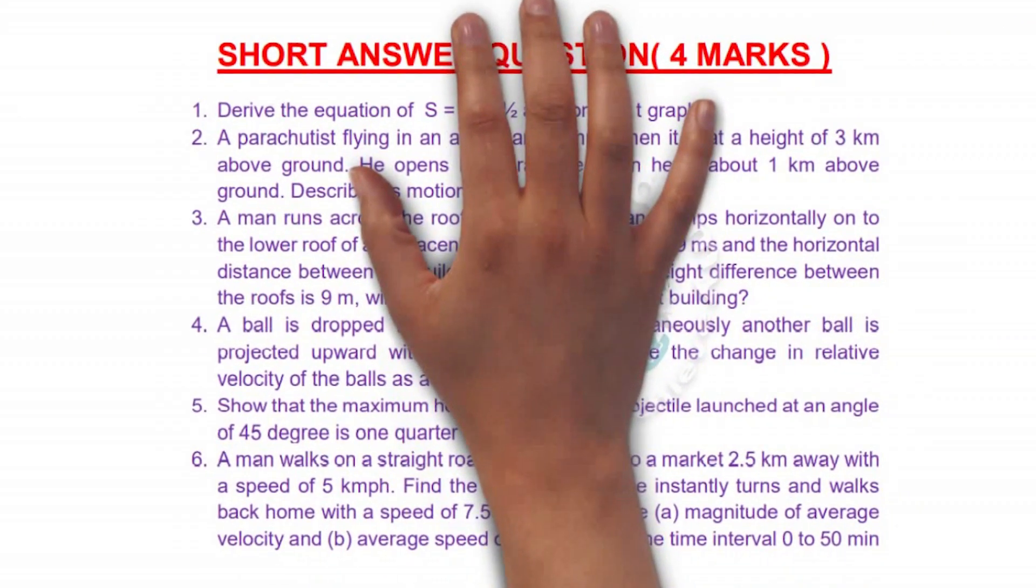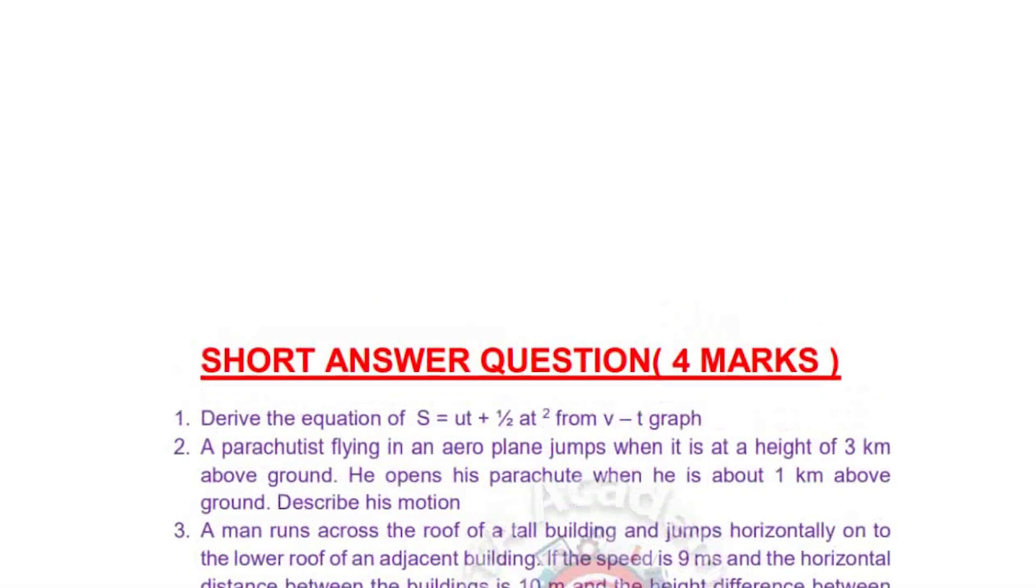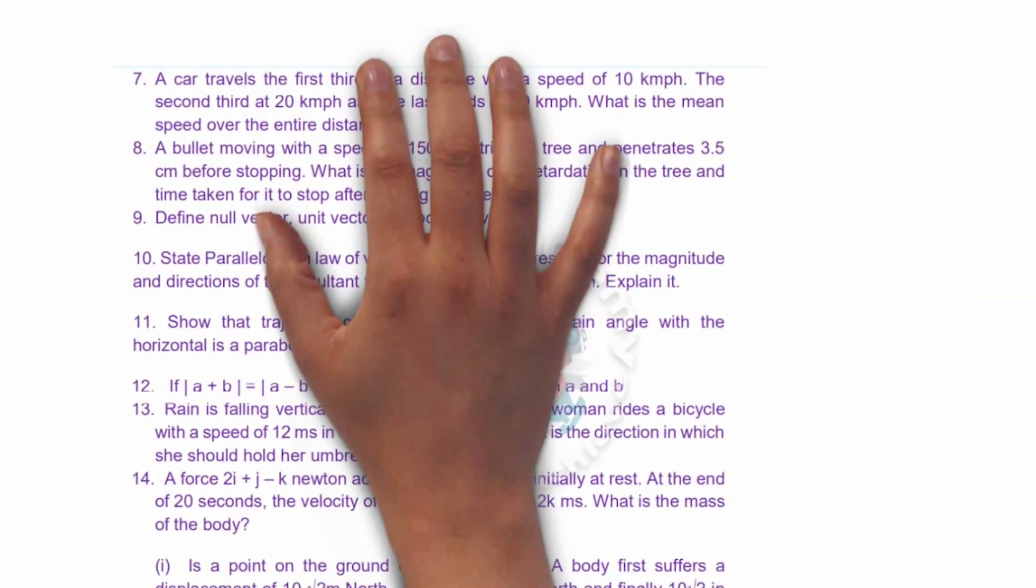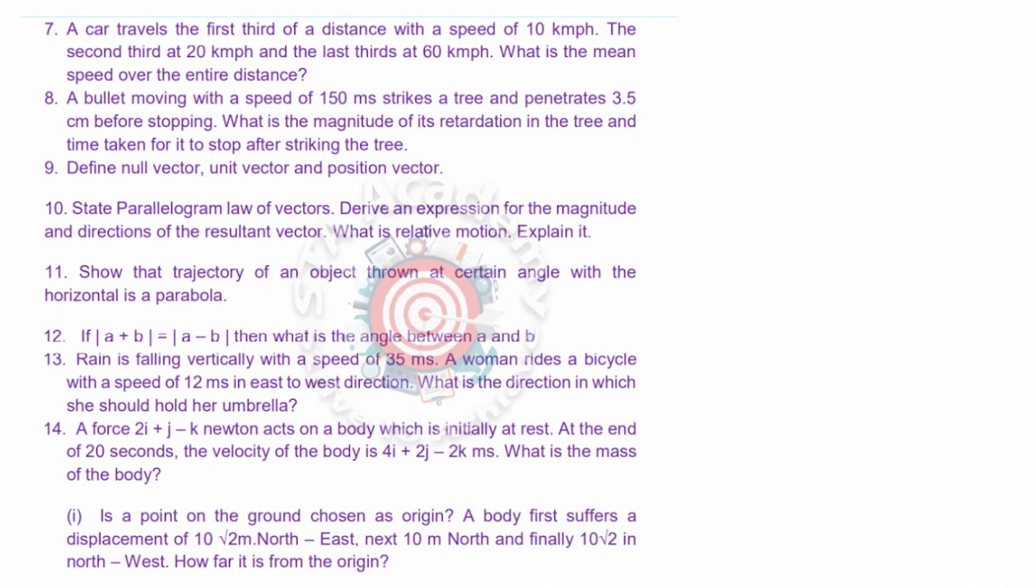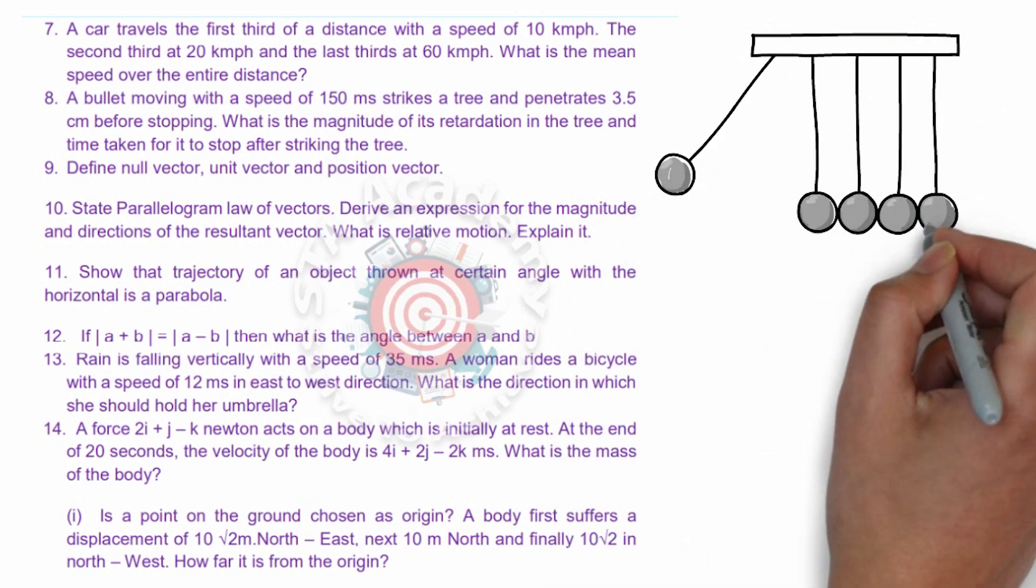After that we have SAQ questions. We know that SAQ questions will give you 4 marks. The first SAQ: derive the equation S equals UT plus half AT square. Second is parachutist flying in an airplane. Third is a man runs across the roof of a tall building. Fourth is a ball is dropped from a building. Fifth is show that the maximum height reached by the projectile launched at an angle of 45 degrees. Sixth is another numerical. Seventh one is also a numerical problem. Eighth is also a numerical problem. Ninth is define null vector, unit vector, position vector. Tenth is parallelogram law of vectors. Eleventh is trajectory of an object.